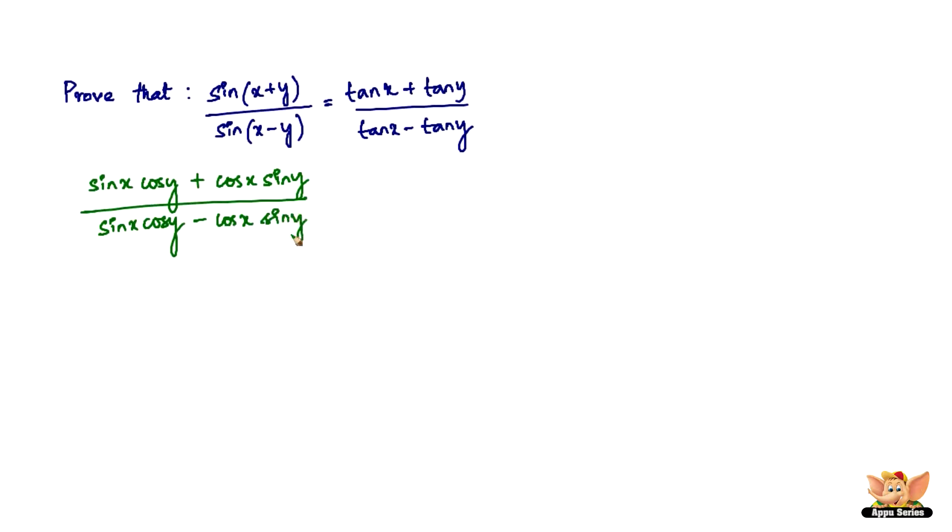Sine of x minus y is going to be sin x cos y minus cos x sin y. Nothing different. So now what we're going to do is, now since we do need tan x and tan y right. So that means we need to have sin x by cos x to get tan x. And then we need to have sin y by cos y to have tan y right. So now what we're going to do is, for that we need to divide both the numerator and the denominator by cos x cos y. So that's what I'm going to do.